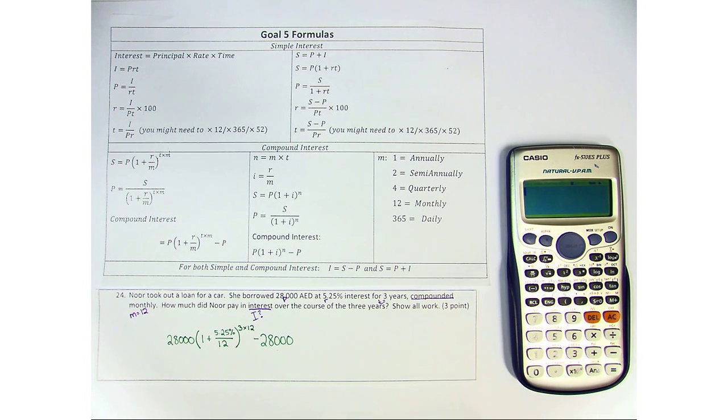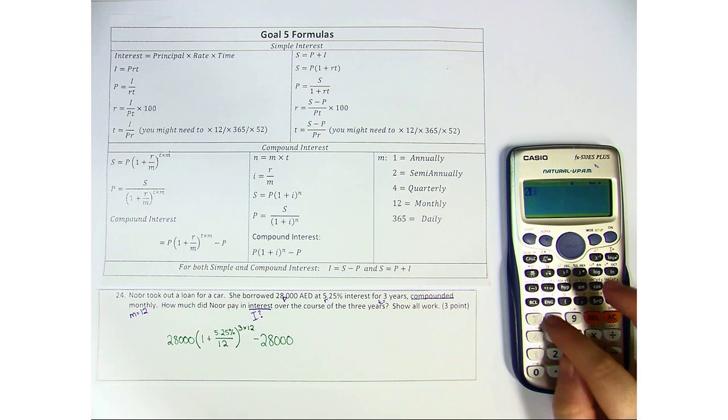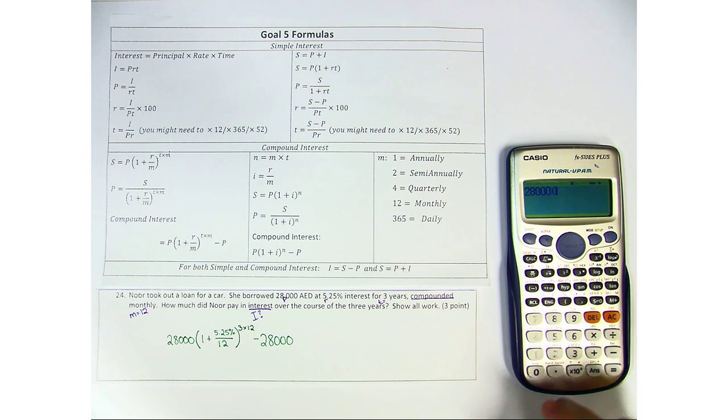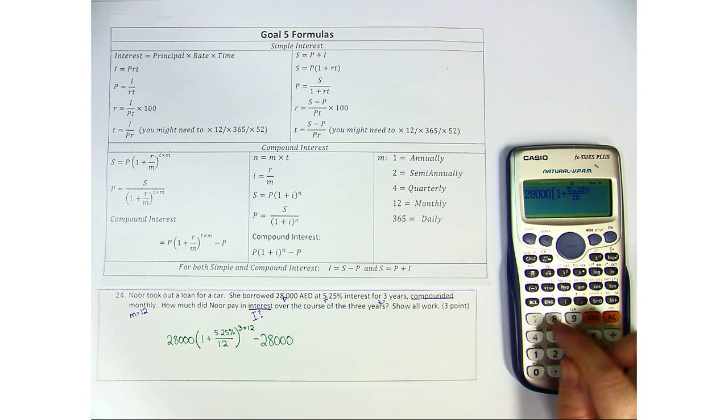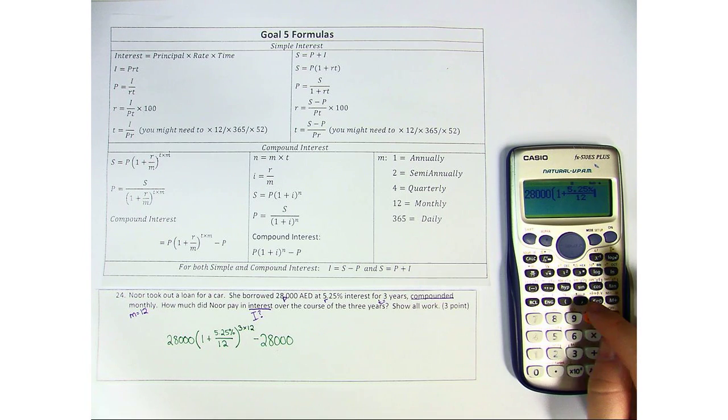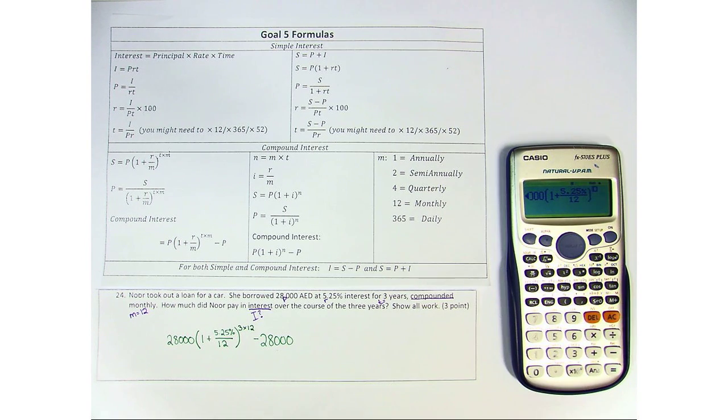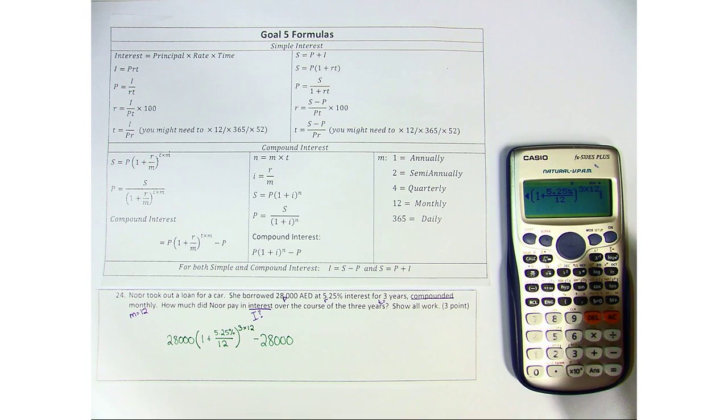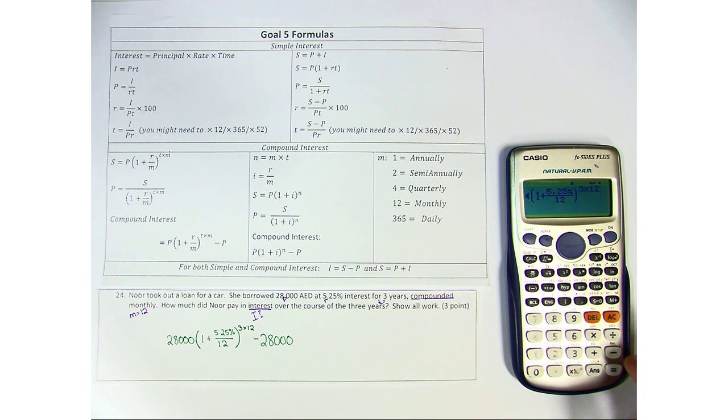So let's go ahead and put this in our calculator. 28,000, open bracket, one plus, fraction, 5.25%, over 12, close bracket, and we're raising it to a certain power. Three times 12, move the cursor over so it goes back to where it needs to go,